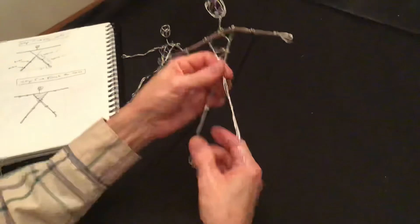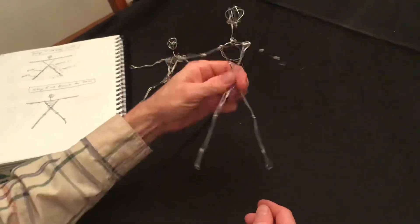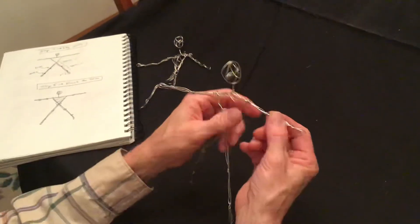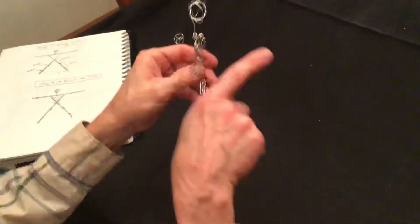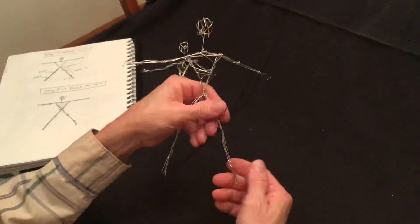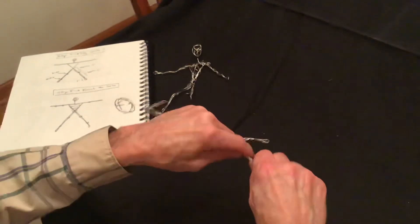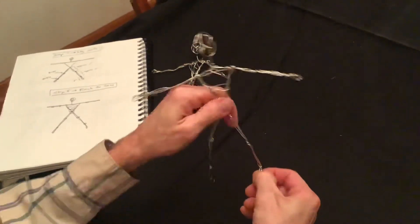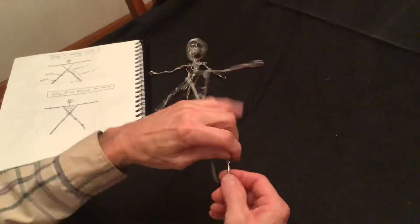Okay, right now the sculpture can face in either direction, so you determine what looks like the front to you. I think this is going to be the front. So that means I'm going to take the feet and bend them forward to get this started.